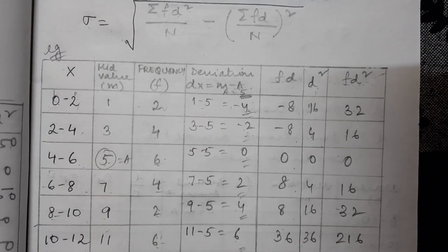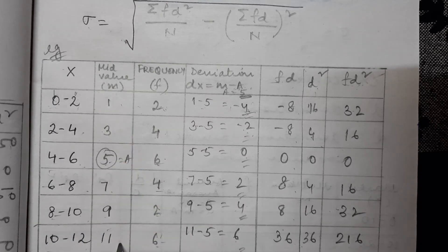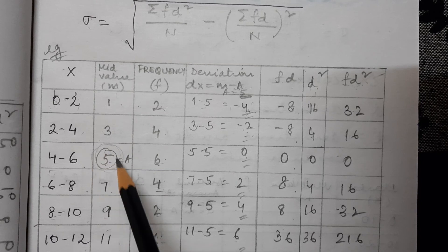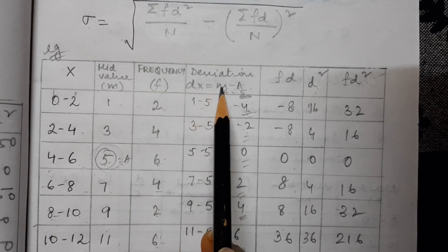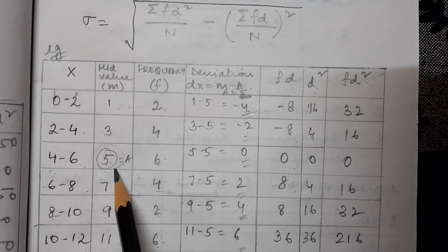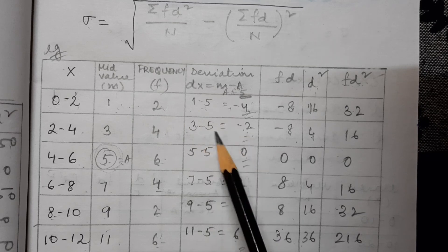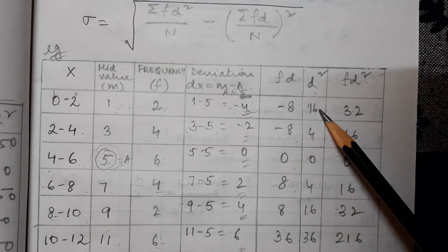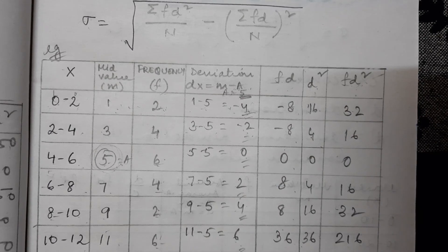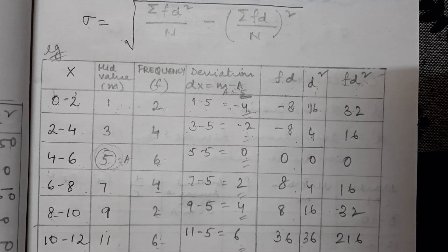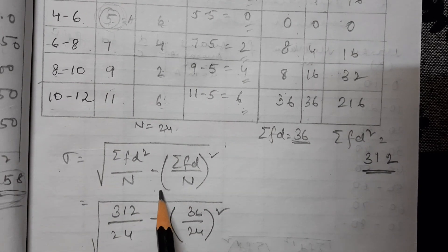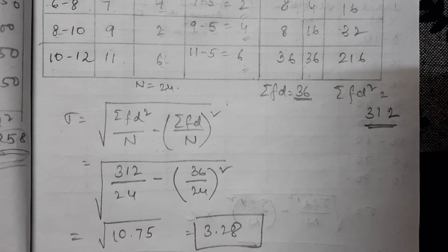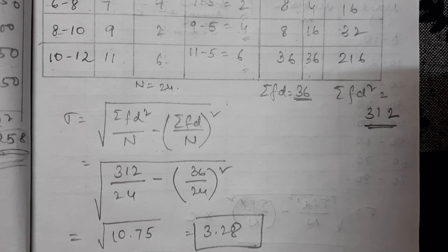To summarize: you are given class intervals and frequencies; find mid values; take an assumed value A; find deviations d = m − A; find fd; find d² and fd²; then put them into the formula for standard deviation using the shortcut method for a continuous series. I hope this is clear. Go through this and we will proceed with the next part of the chapter. Om Namashivaya.